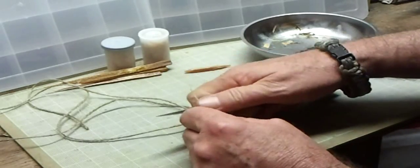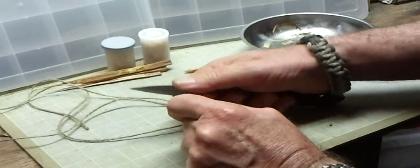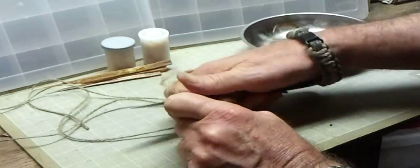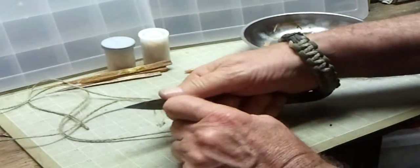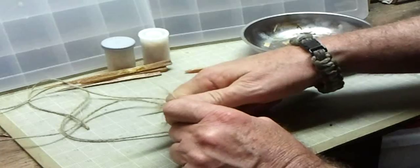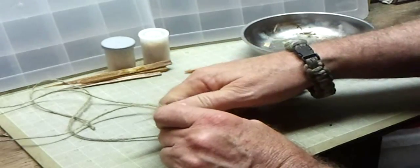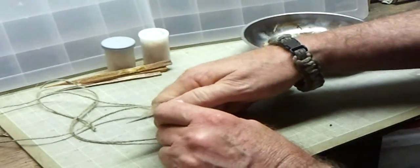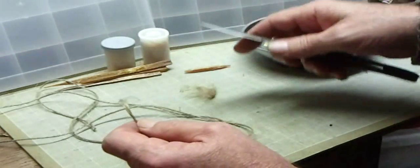I just take my knife and I start stripping like that. Eventually I start getting a bigger piece. I try not to cut it, I just try and run the knife along the edge of the jute, so that way it kind of shaves it into smaller pieces. As you see, it kind of collects on the knife.